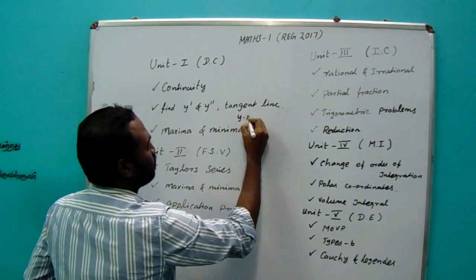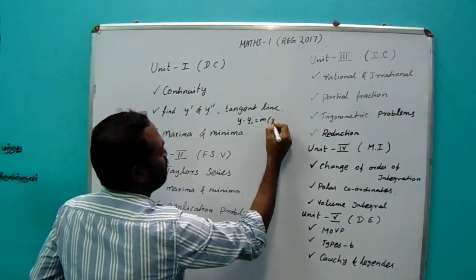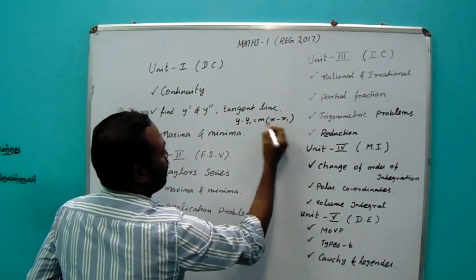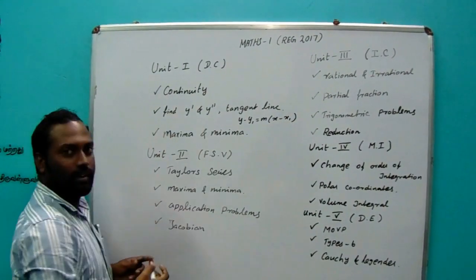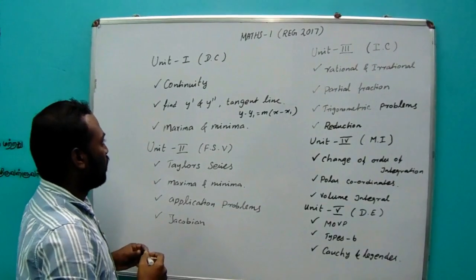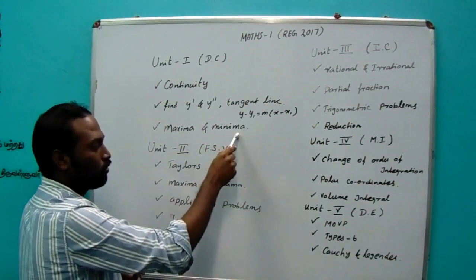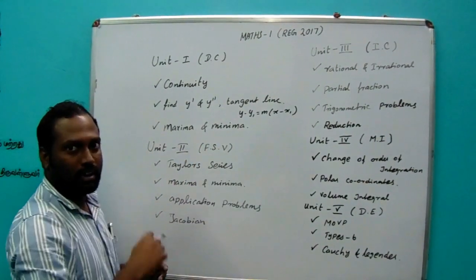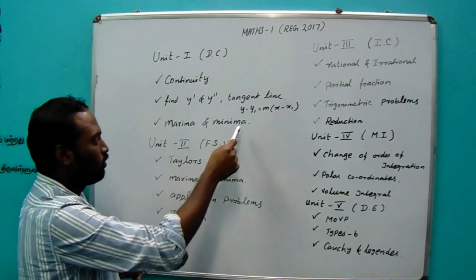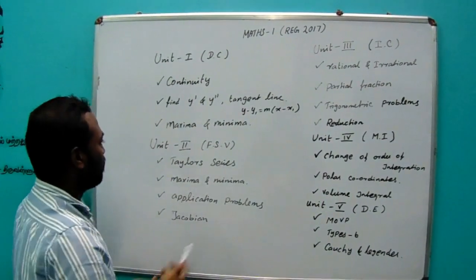Y minus y1 equal to M into x minus x1. What is M? You know that — y dash is M. Then maximum minimum based upon problems. Concave down, concave up based upon problems. That is based on the maximum minimum.